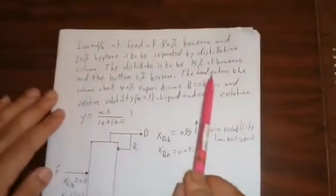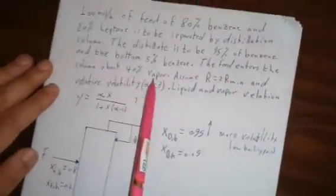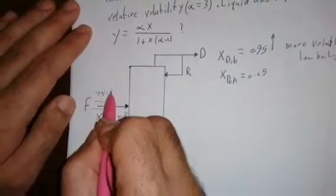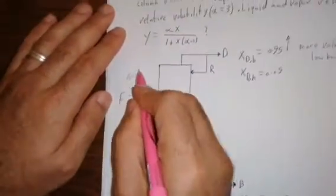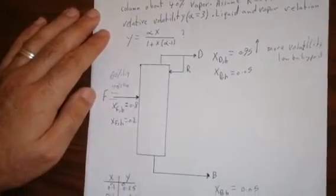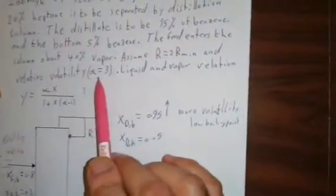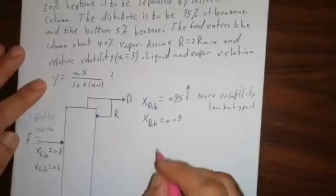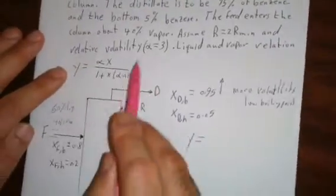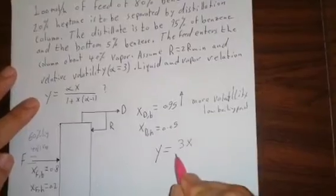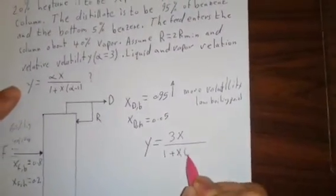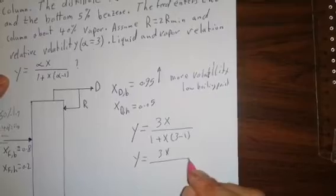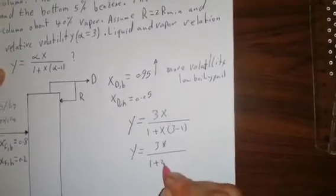We go through this equation. The feed enters the column about 40% of vapor, that is mean in this feed there's a stream 40% vapor and that is mean also 60% liquid. R maximum equal to R minimum and relative volatility equal three. So the equation of liquid vapor will be y equal volatility 3, that is mean 3x divided by 1 plus x volatility 3 minus 1, so y will be equal 3x over 1 plus 2x.